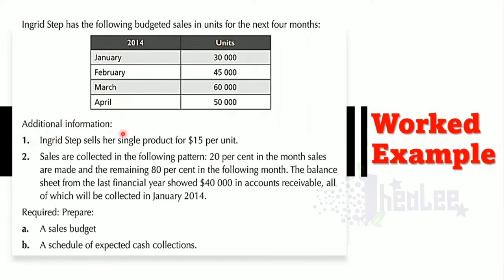Additional information: Ingrid Step sells a single product for $15 per unit. Sales are collected in the following pattern: 20% in the month sales are made and the remaining 80% in the following month.